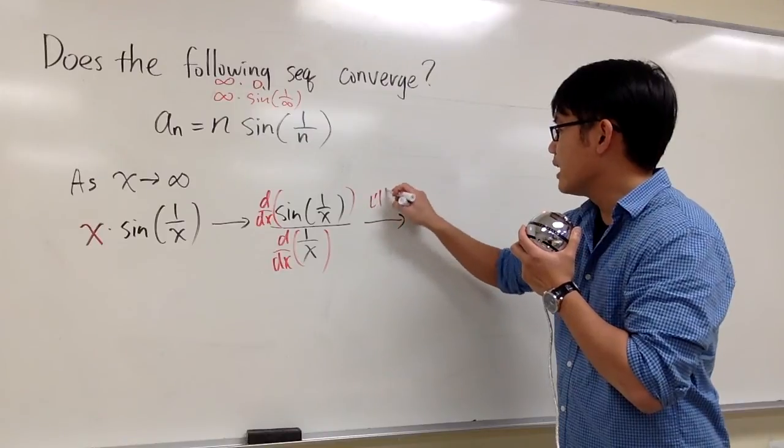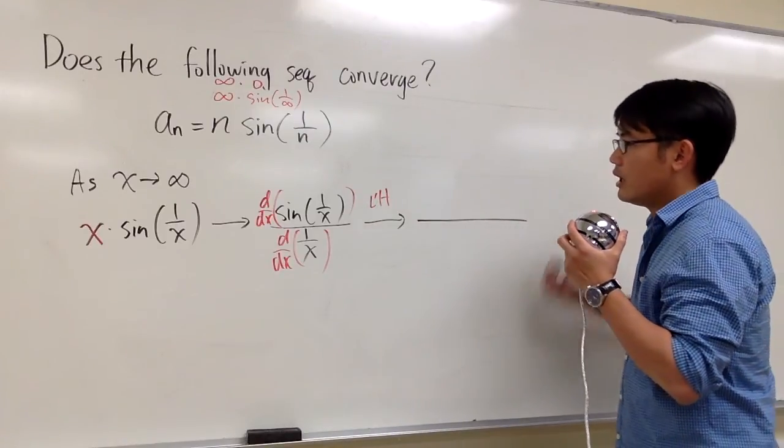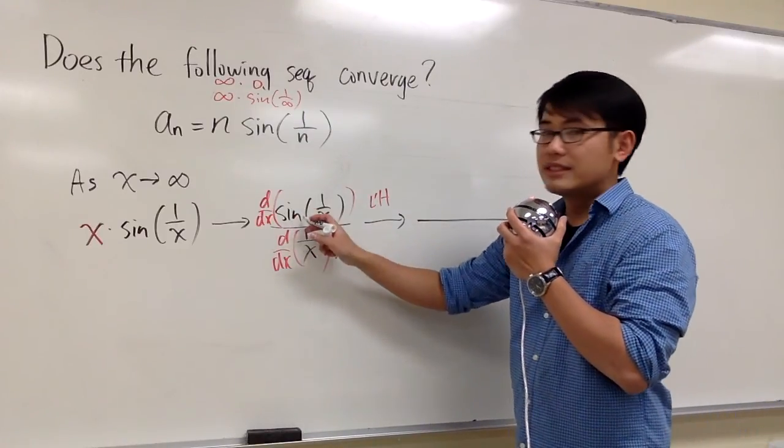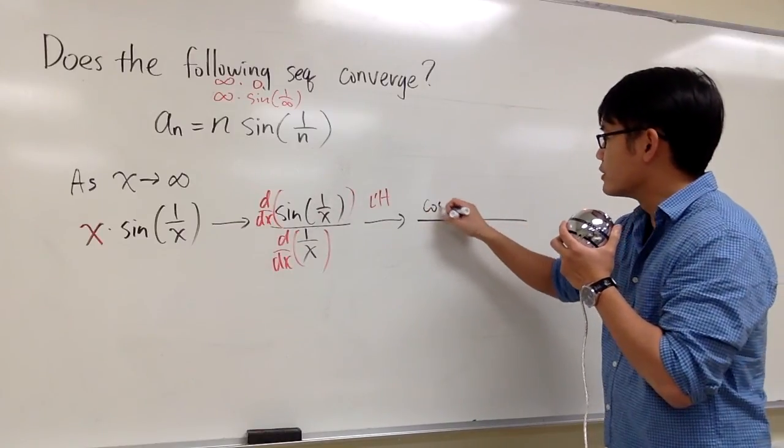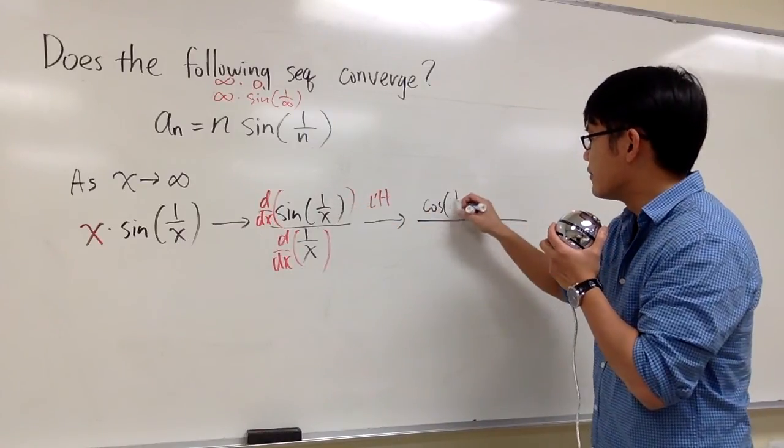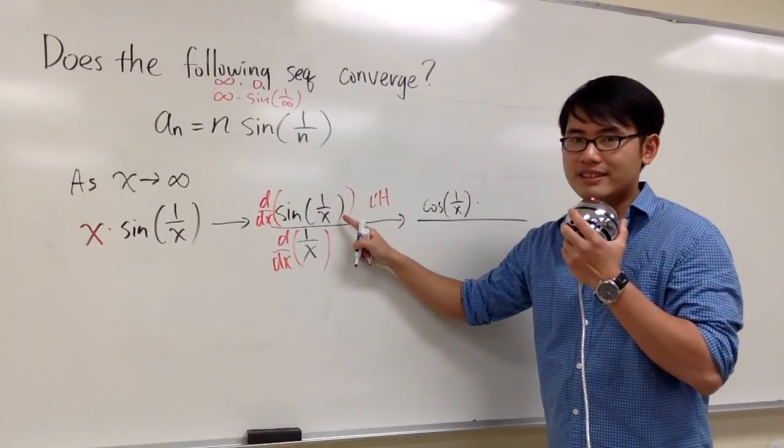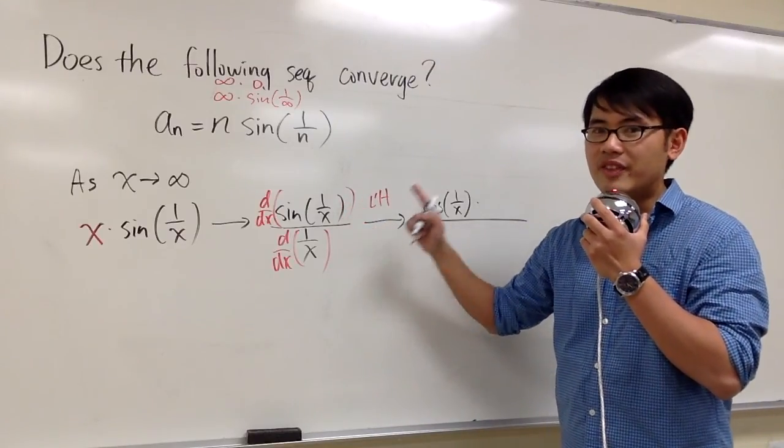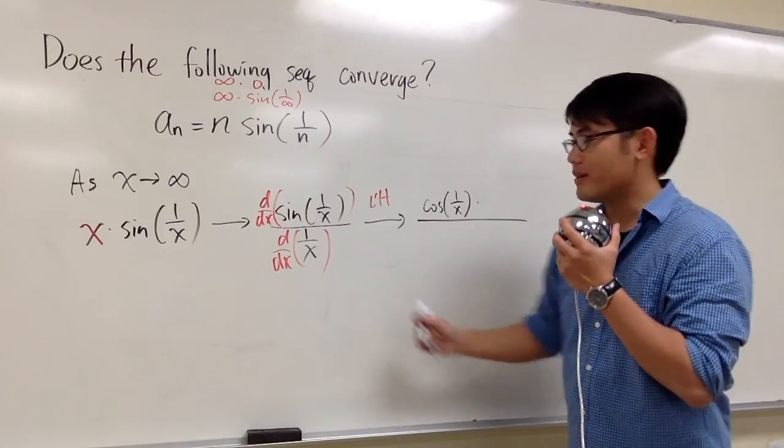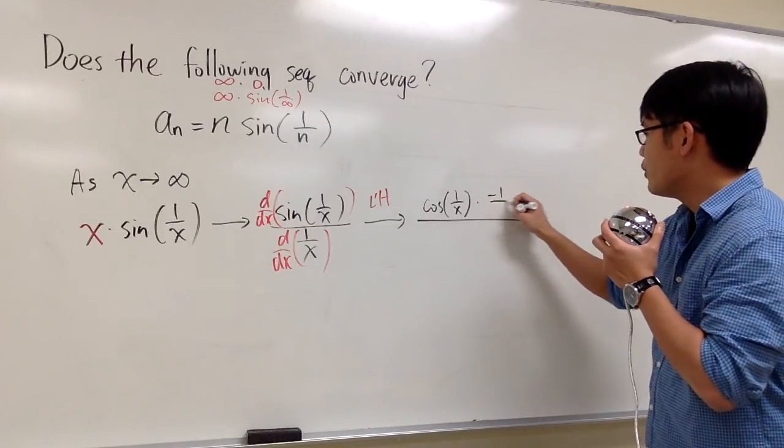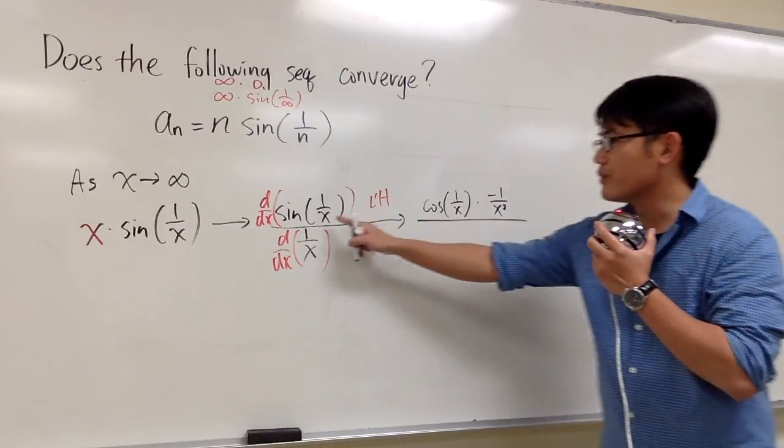By applying L'Hôpital's rule, on the top, the derivative of sine is cosine. So we have cosine. The inside stays the same for now. Then we multiply by the derivative of 1 over x. The derivative of 1 over x is negative 1 over x squared. Negative 1 over x squared by the chain rule from here to here.